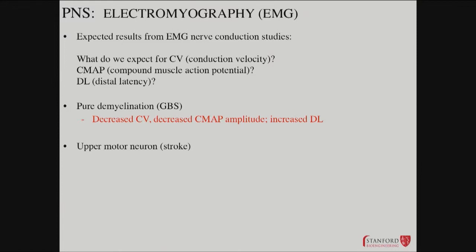You see something totally different with upper motor neuron lesions, like a stroke — everything's completely normal. So this can really help: someone comes in with weakness, you do the EMG studies and it's completely normal, and that turns your attention to the central nervous system — what's going on centrally that could be wrong.